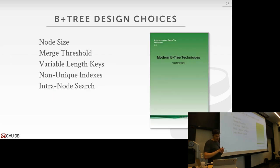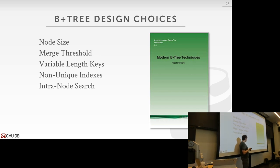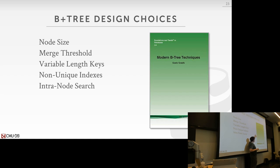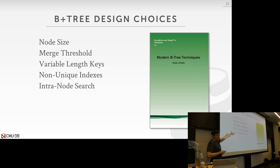Now let's get to the good stuff. We know what a B+ tree is — let's talk about how to actually build it and make this thing useful. There's a great book written by Goetz Graefe, a famous database researcher — we'll talk about a lot of the stuff he's done for query optimization later on. He wrote this book covering all the modern techniques, tweaks, and optimizations you can do in a B+ tree in a real system — it's a really light read covering all the really important topics. We're going to cover how to handle different node sizes, how to do merging, how to handle variable-length keys, non-unique keys, and intra-node search — how to do better searches inside the node.